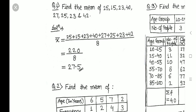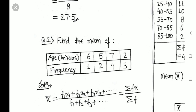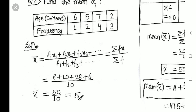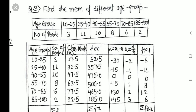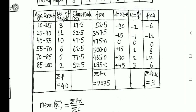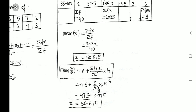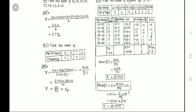So there are three types of questions. First, direct values are given — just add them and divide by the count. Second, ungrouped frequency distribution — use x̄ = Σ(f×x) / Σf. Third, grouped data — either the direct class mark method or the assumed mean method. I hope this will help you calculate the mean at any level of examination.